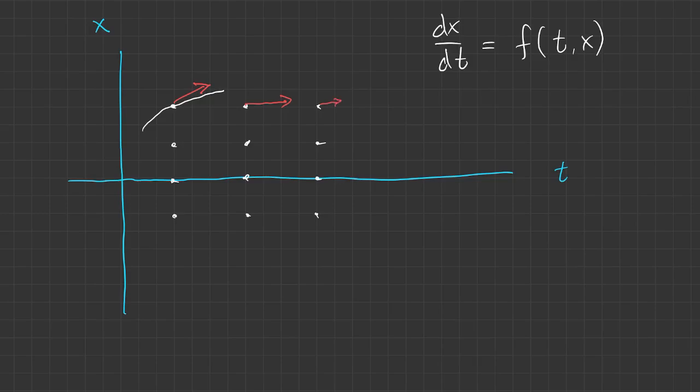And we can repeat this at all the different points in the grid. The length of the arrow will show us the speed, or the magnitude of the velocity, and the direction shows us the direction of the velocity at that point.